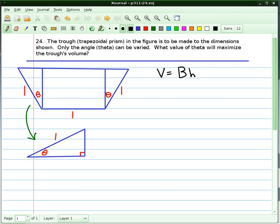I've already drawn the base of the prism. It is a trapezoid, and as you can see, the only thing that's going to vary are these angle thetas here that will make the trough wider but shorter or taller but narrower. And our job is to figure out which value of theta maximizes that volume.